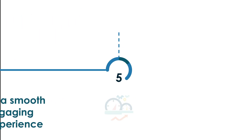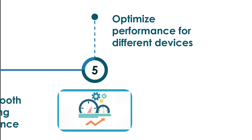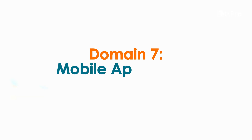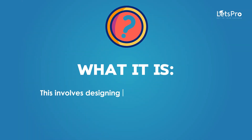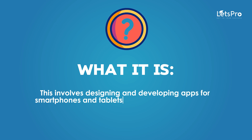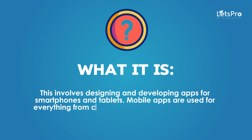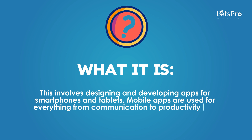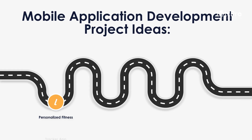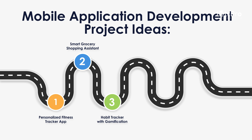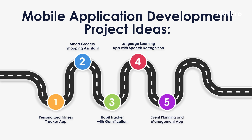Optimize performance for different devices. Domain 7: Mobile Application Development. This involves designing and developing apps for smartphones and tablets. Mobile apps are used for everything from communication to productivity and entertainment. Project ideas: Personalized fitness tracker app, Smart grocery shopping assistant, Habit tracker with gamification, Language learning app with speech recognition, and Event planning and management app.